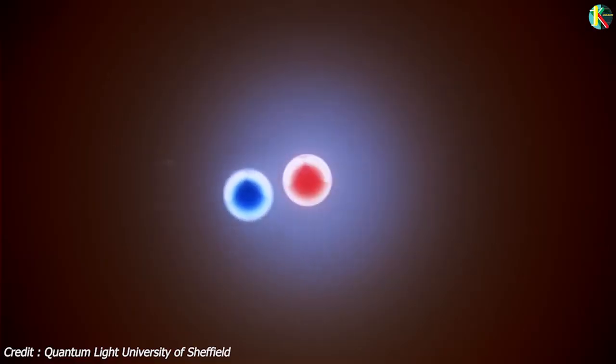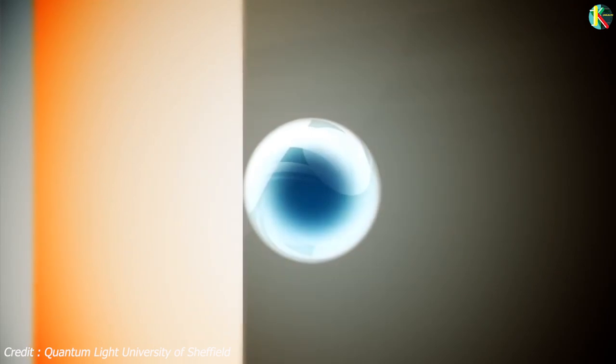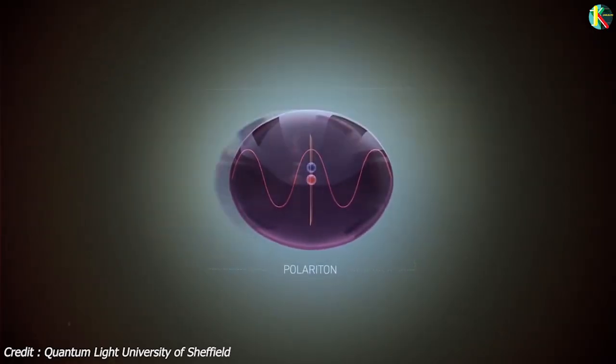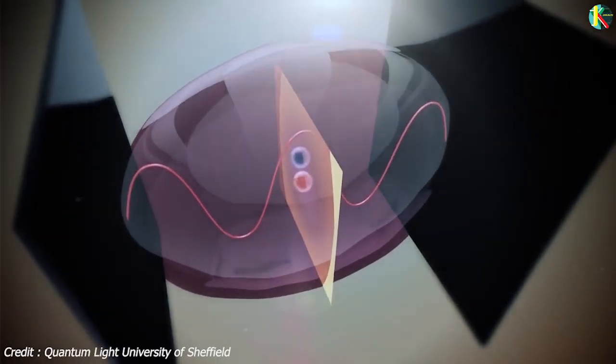So how does it work? The photons interact with electron-hole pairs called excitons. These excitons impose a dipole moment which is combined with the dipole moment of electromagnetic field and they couple strongly. The final result is a polariton, considered a quasi-particle composed of half light and half matter.